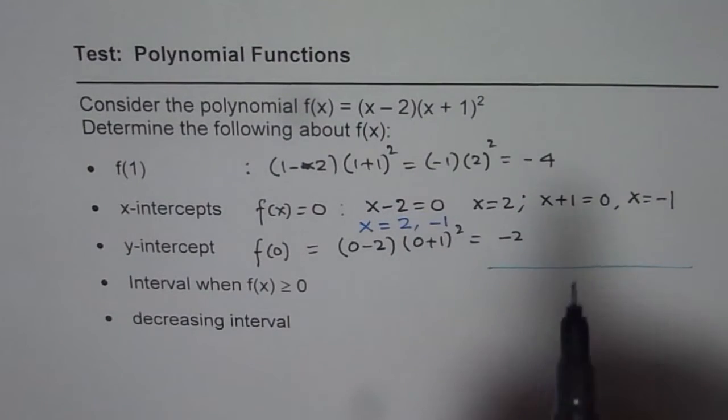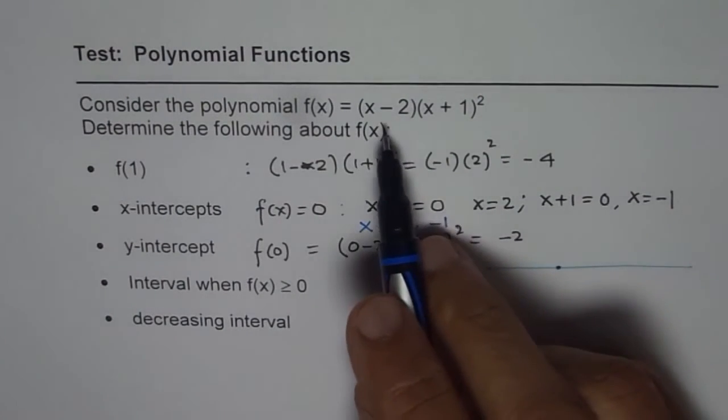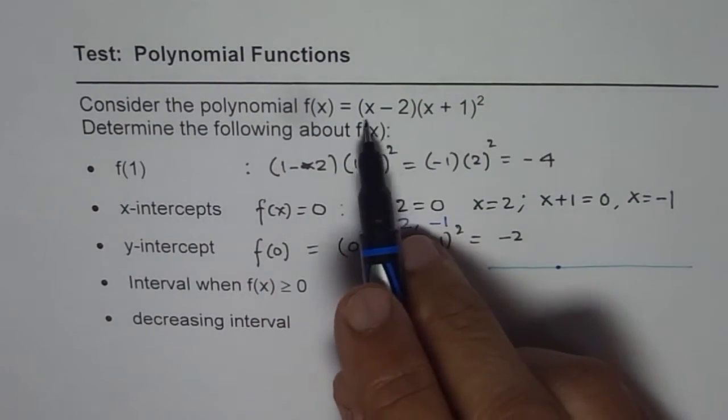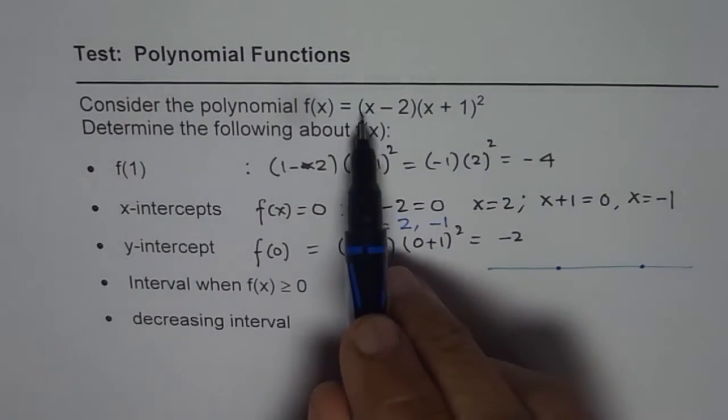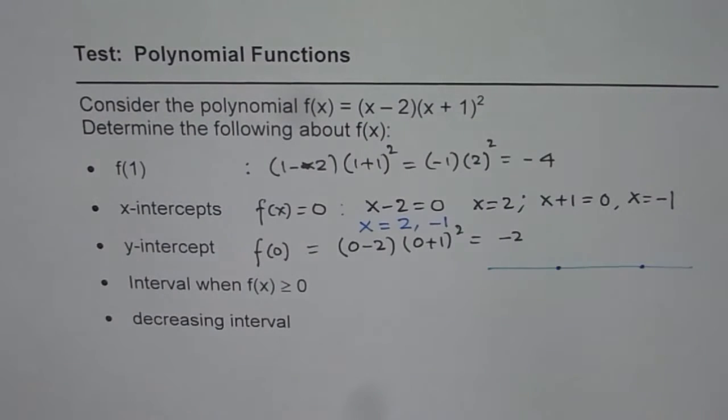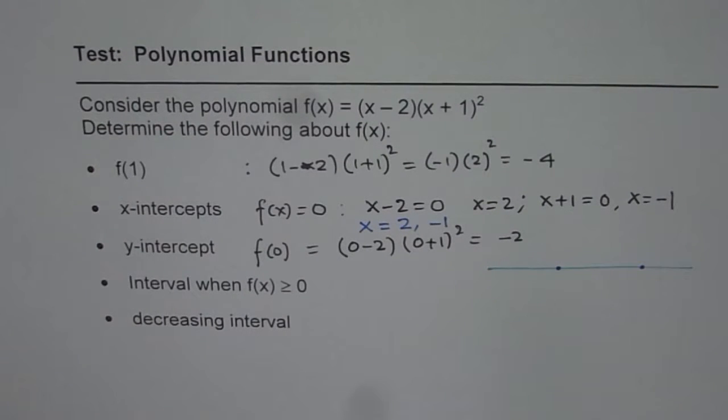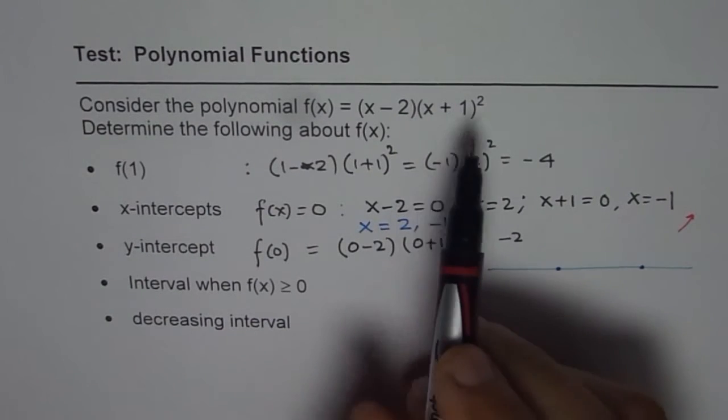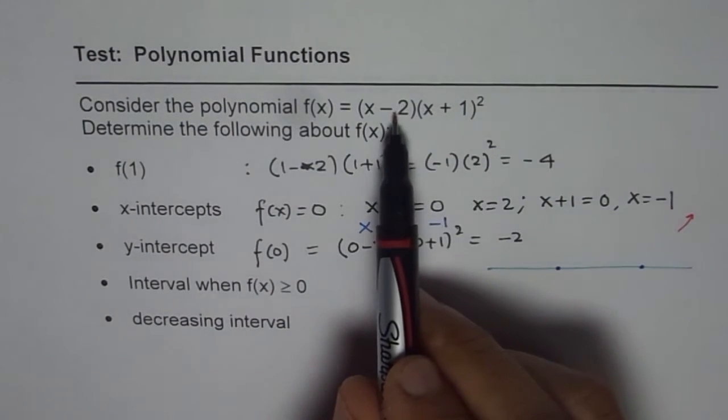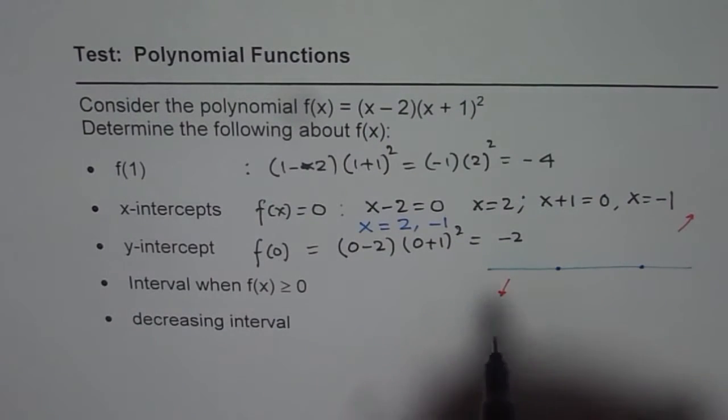Now (x + 1)² means at -1 we have a 0 and the order is 2. x - 2 means at 2 we have a 0. Both x terms have positive coefficients, so the leading coefficient is positive. That means right side is up. So the right side is up. And since the degree is 2 plus 1, 3, a positive end.